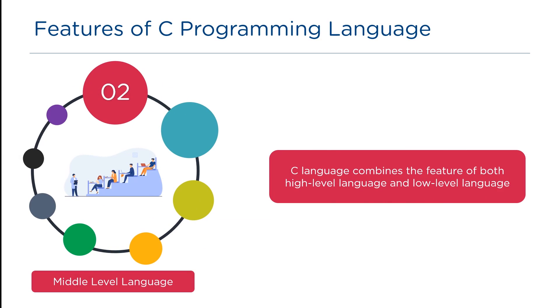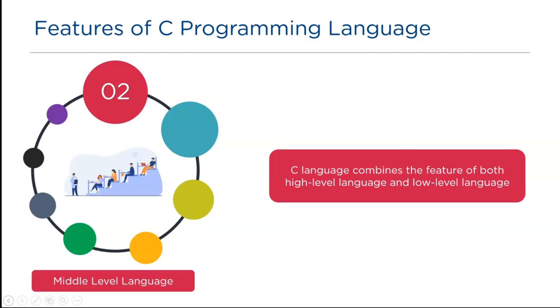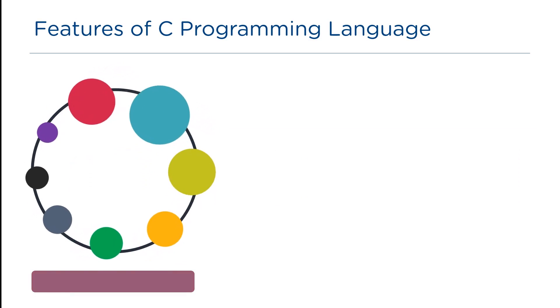C combines the features of both high-level and low-level languages, resulting in faster execution and smoother application development. Hence, C earned its patent as the first mid-level programming language.